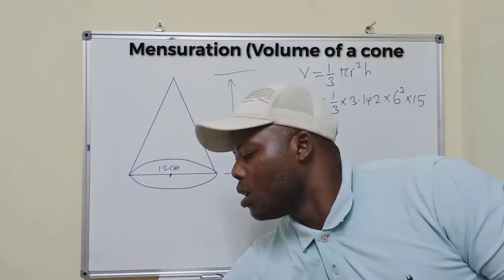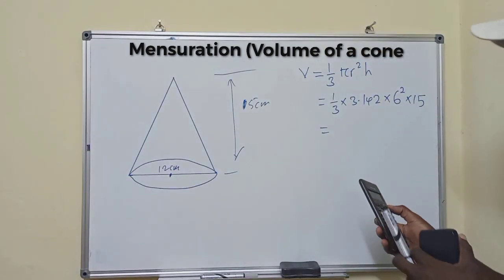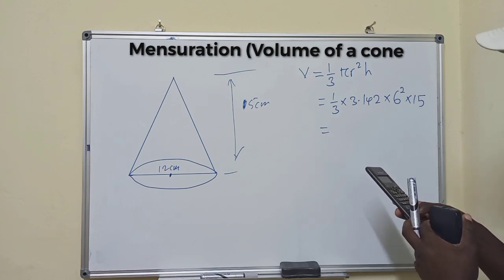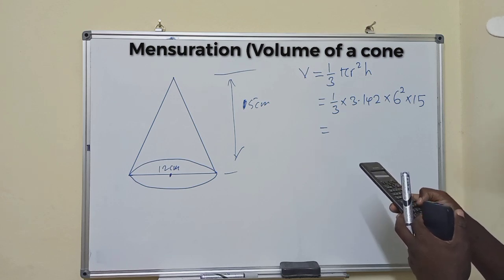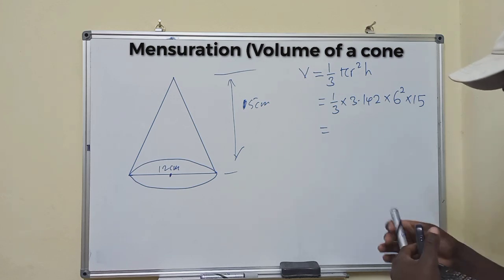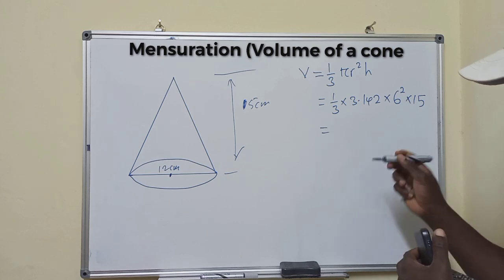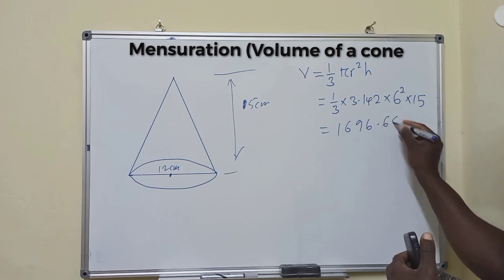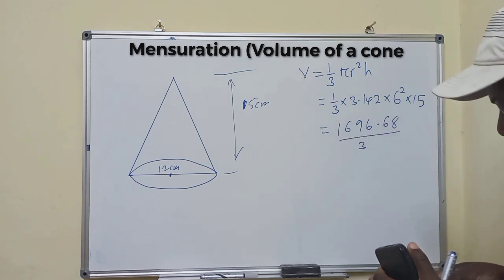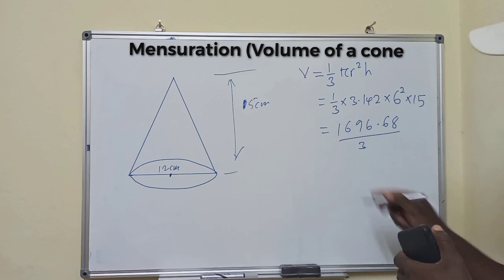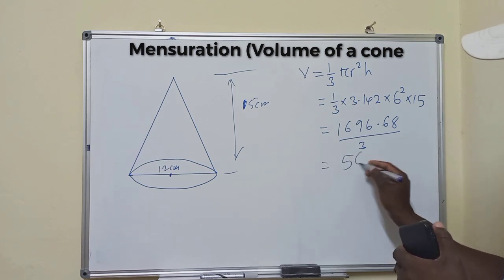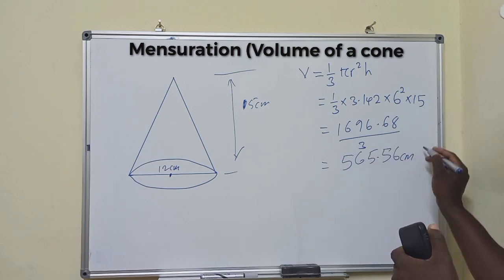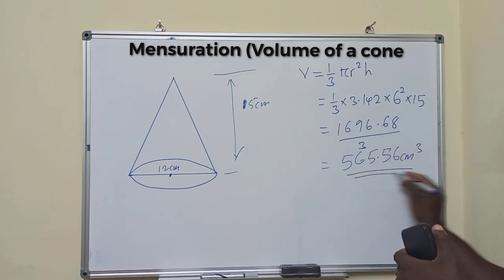So now, when we reach this point, we get our calculator, we say 1 times 3.142 times 6 squared times 15. What are we getting? We're getting 1,696.68. You divide by 3. So when we divide by 3, we are getting 565.56 centimeter cubed. So this is the volume.